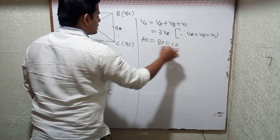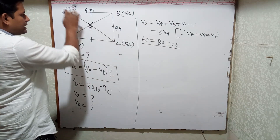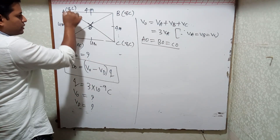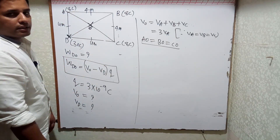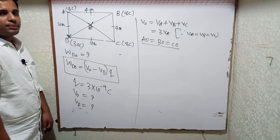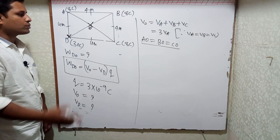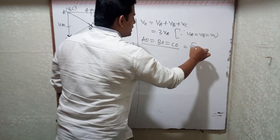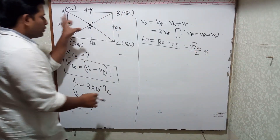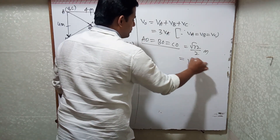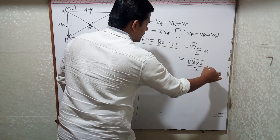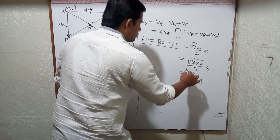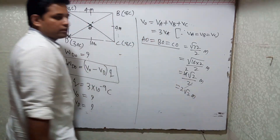Triangle ADC is a right-angle triangle with sides 4 meters and 4 meters, so the diagonal AC = √(4² + 4²) = √(16 + 16) = √32 meters. Half of that is AO = √32 / 2. This can be written as √(16 × 2) / 2 = 4√2 / 2 = 2√2 meters. So AO = BO = CO = 2√2 meters.